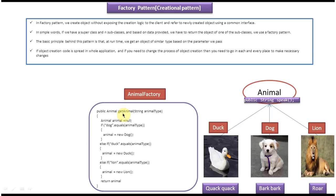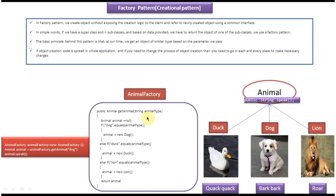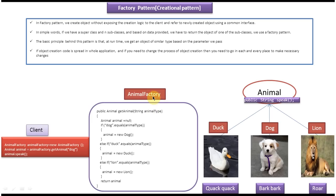Now we will see how the client class looks. Suppose we want to get a duck object from the animal factory class. What we have to do is create an animal factory object like: animal factory animalFactory = new AnimalFactory(). Once you get the animal factory, you have to call the get animal method by passing the animal type duck. So it will call this method, the duck object will be created, assigned to the super class object reference animal, and returned to the caller. Now it is calling animal.speak(). Since animal has a reference to a duck object, it will call the duck object speak method, which will return quack quack. That is basically this client code calling the animal factory object get animal method.